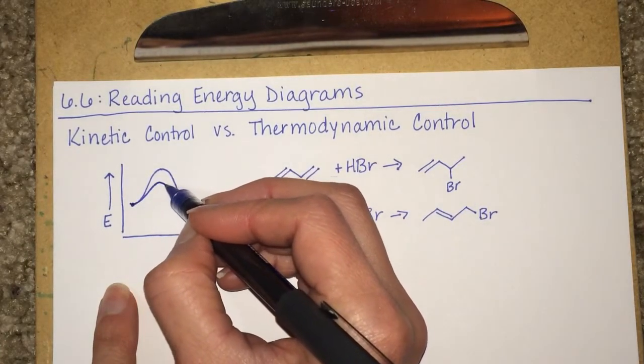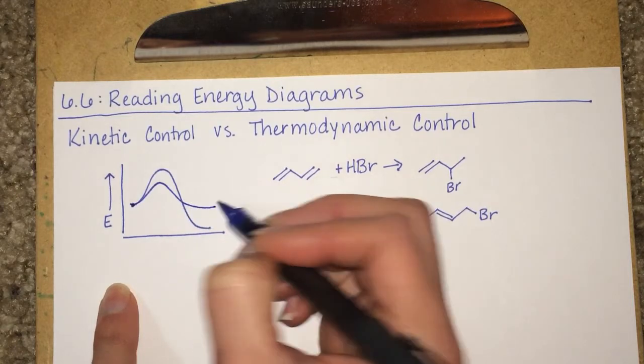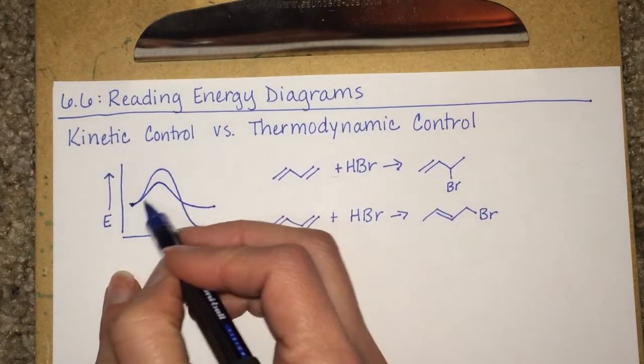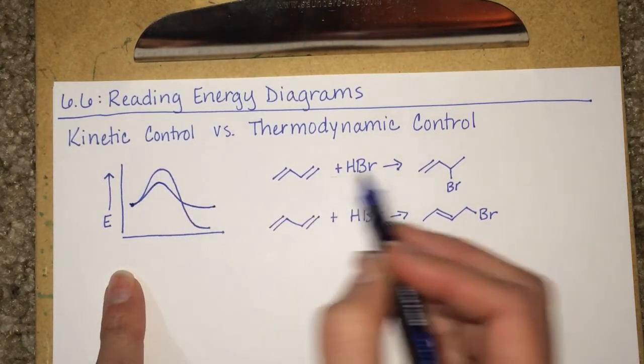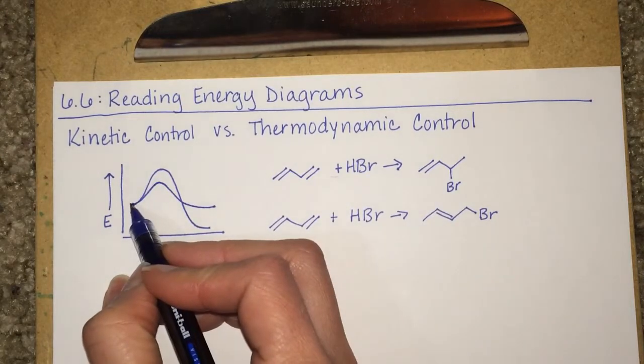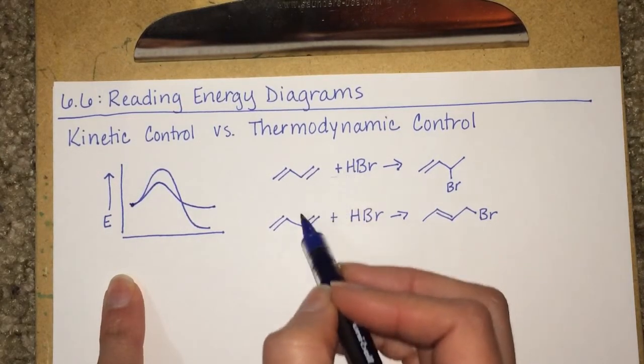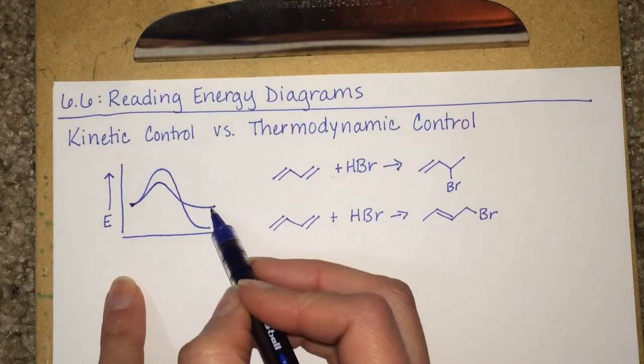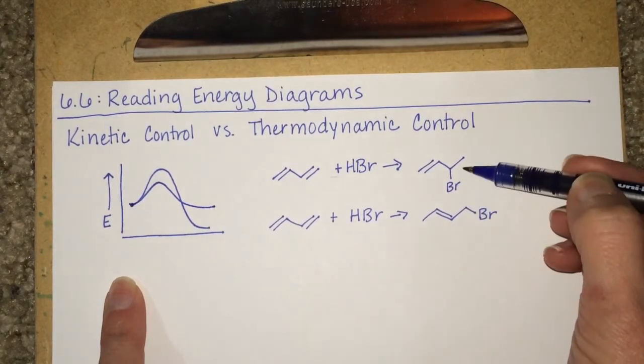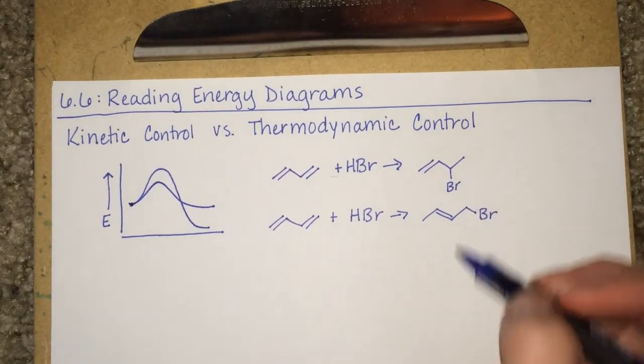So maybe it would look something like this. Two different energy diagrams for the two different processes, both starting at the same point because the energy of the reactants are exactly the same, ending at a different point because the energies of the products are different.